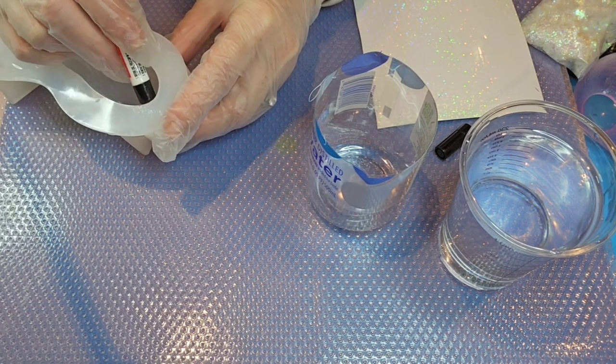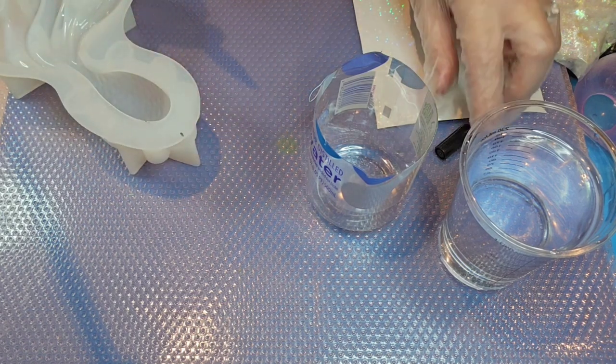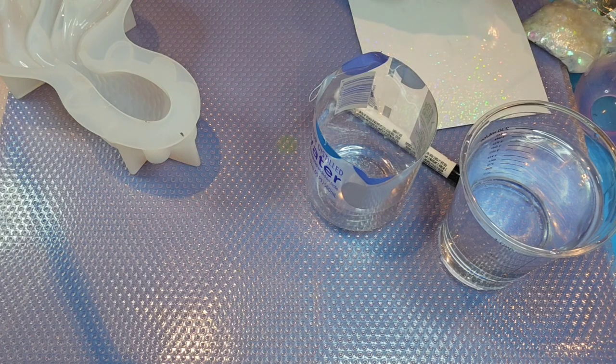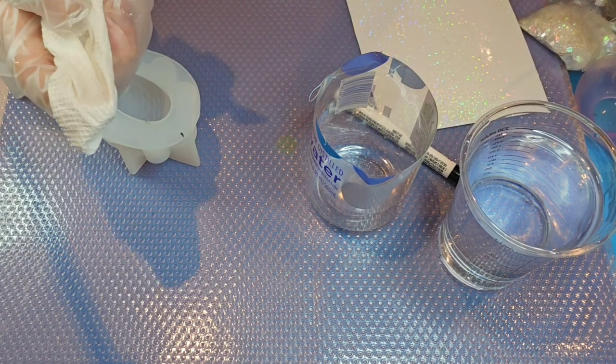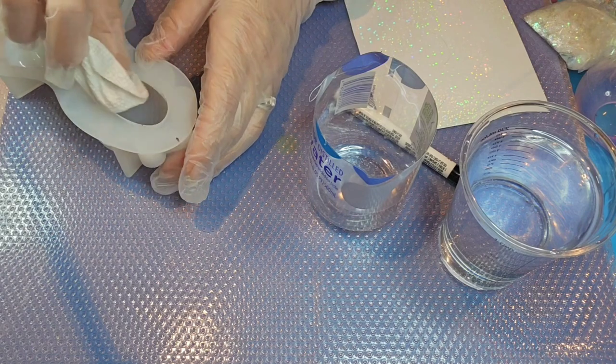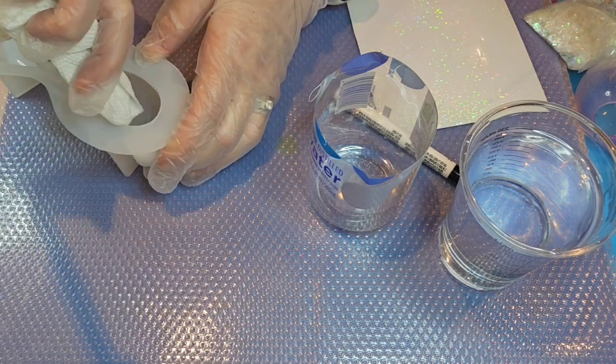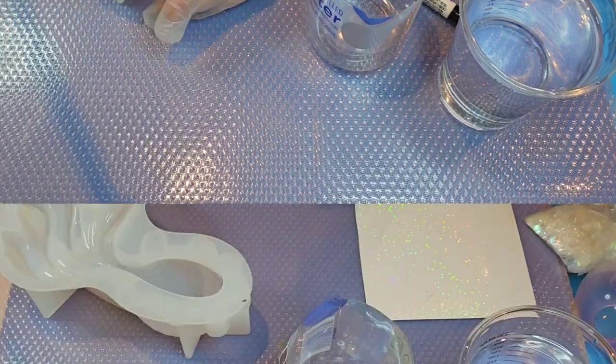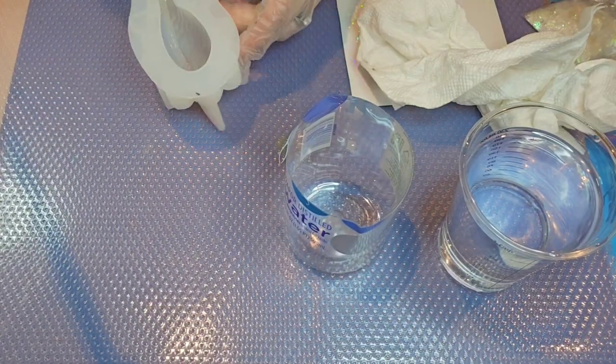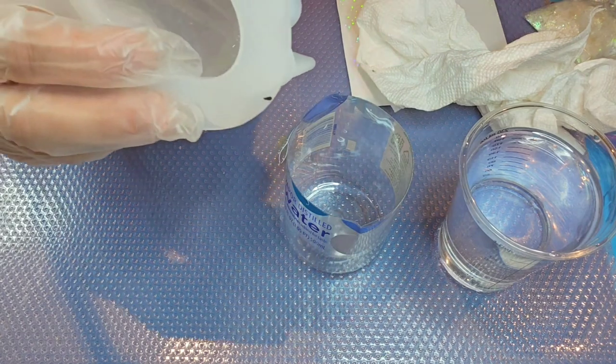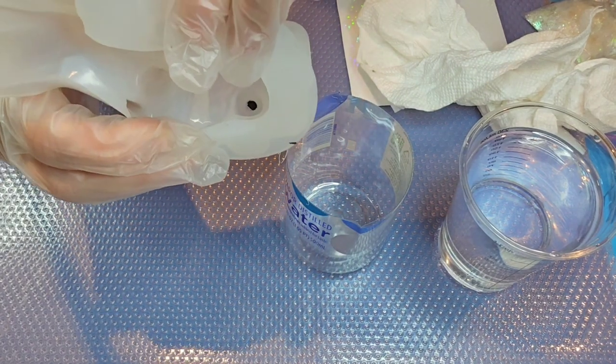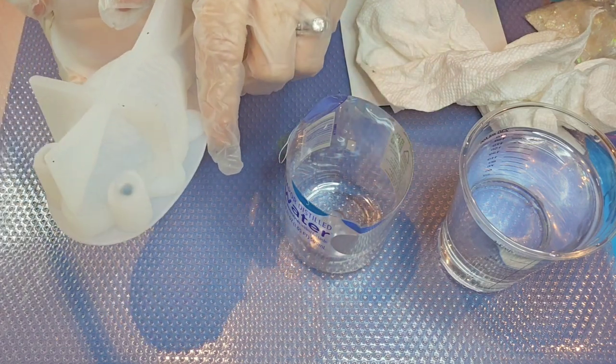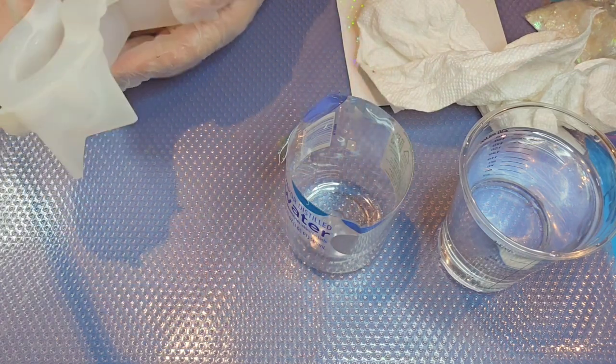They're easy to get to but it's also easy to get resin where you don't want it. So I'm just going to clean that up real quick, just a bit of alcohol here on this paper towel and it just comes right off. Okay, there we go. They look pretty good now. You can see his eyes are just painted with the paint pen in there on both sides.